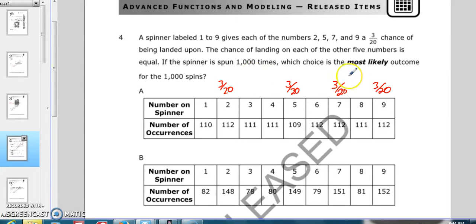That's 3, 6, 9, 12 out of 20. Now what does that leave for the other possibilities? Well, that leaves 20 minus 12 is 8 out of 20.